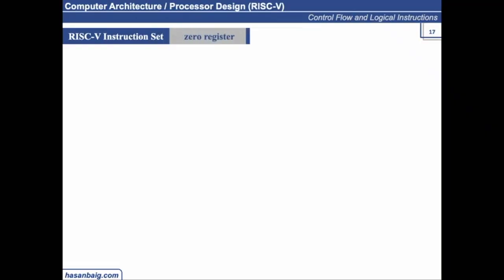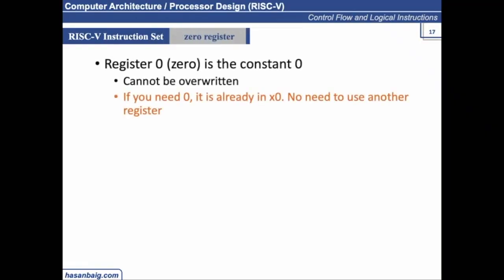Let's talk about zero register. Zero register is the constant zero. We cannot overwrite anything in it. It will remain zero. If you try to store some value in it, it will still be zero. So zero is already there.